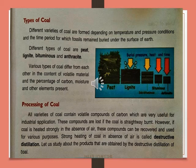How is coal obtained? All varieties of coal contain volatile compounds of carbon which are very useful for industrial applications. In many industries, coal is used as a material to produce many different things. These compounds are lost if the coal is straightaway burned. However, if coal is heated strongly in the absence of air, these compounds can be recovered and used for various purposes. This strong heating of coal in the absence of air is called destructive distillation.